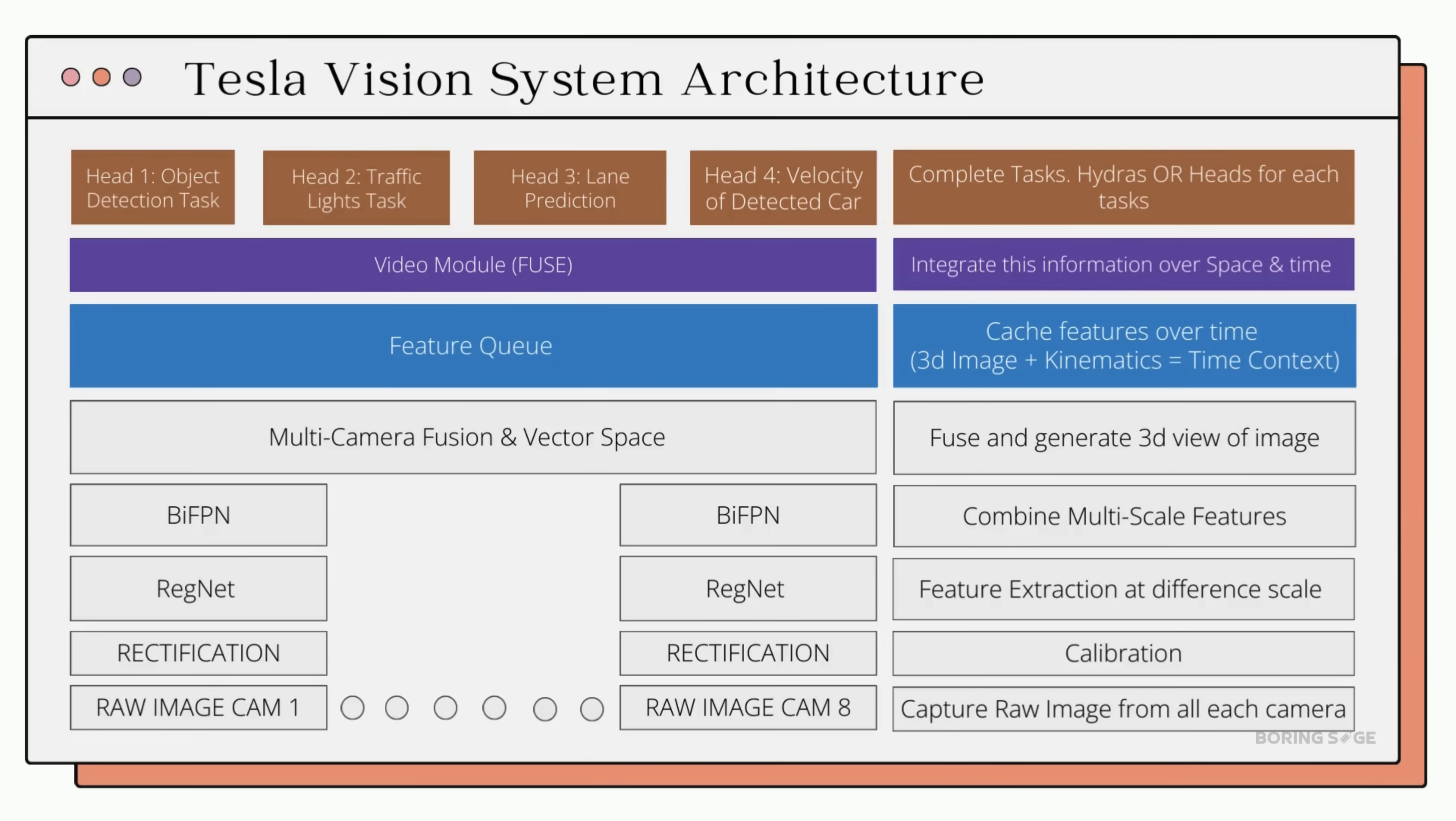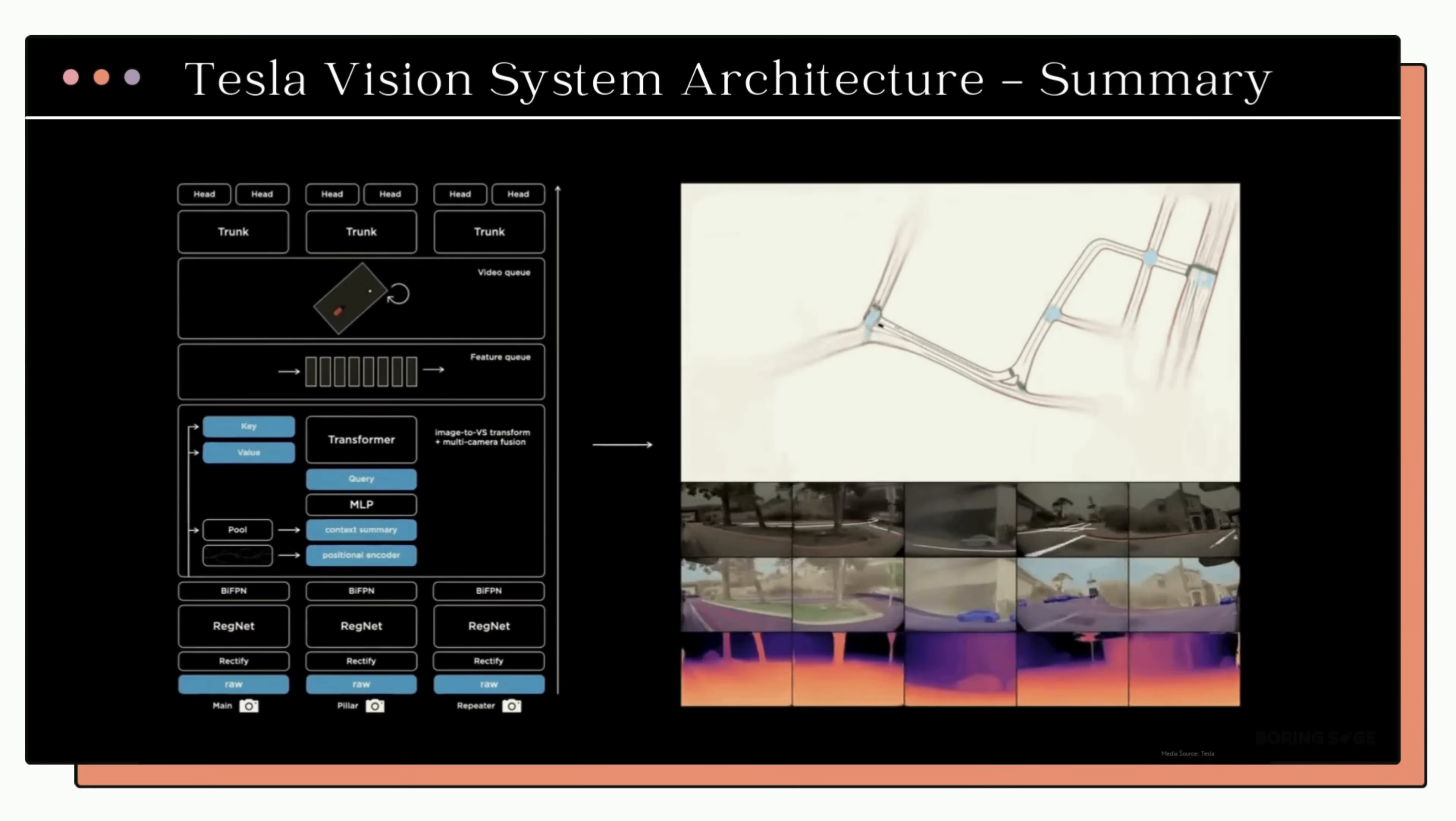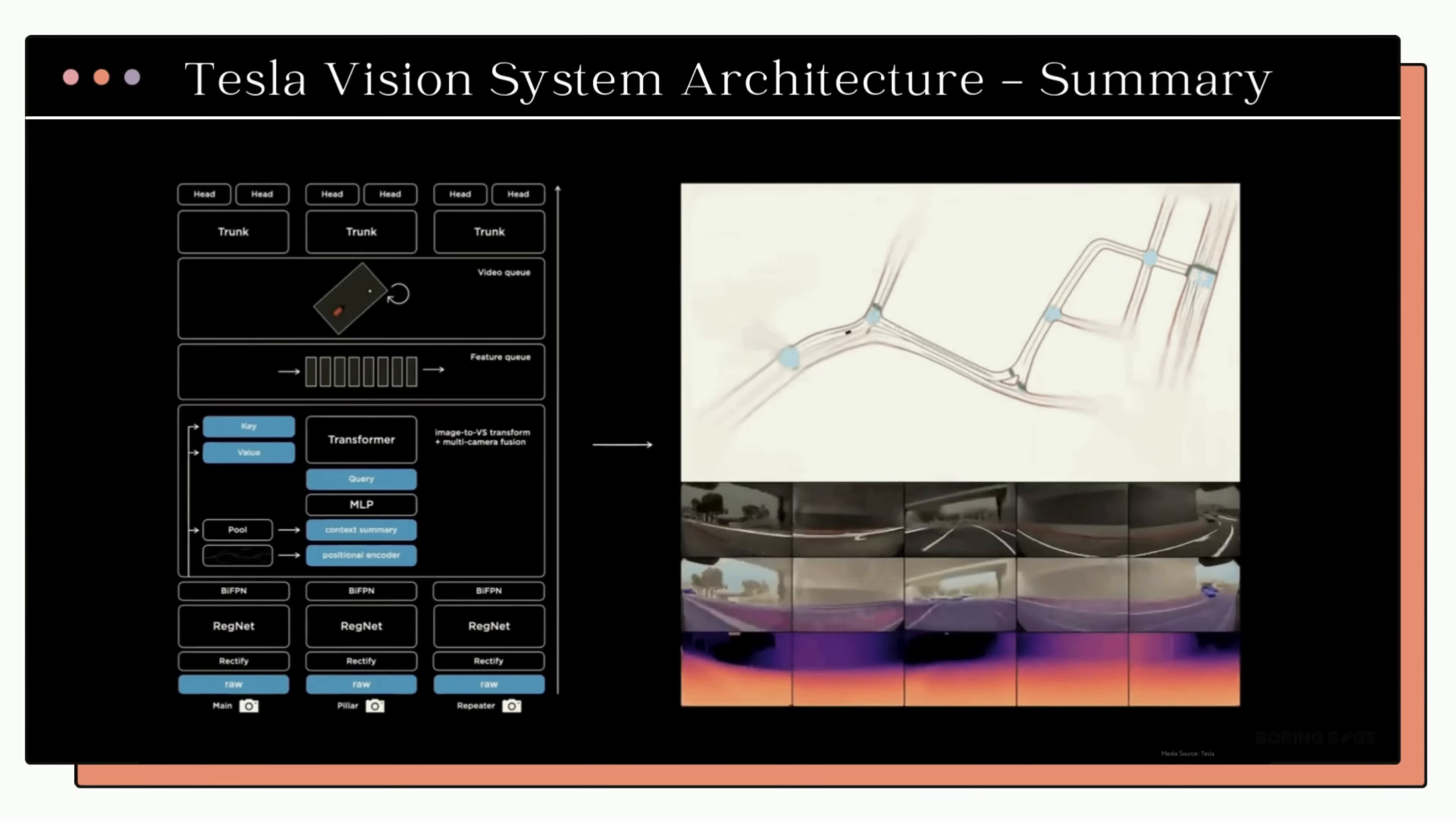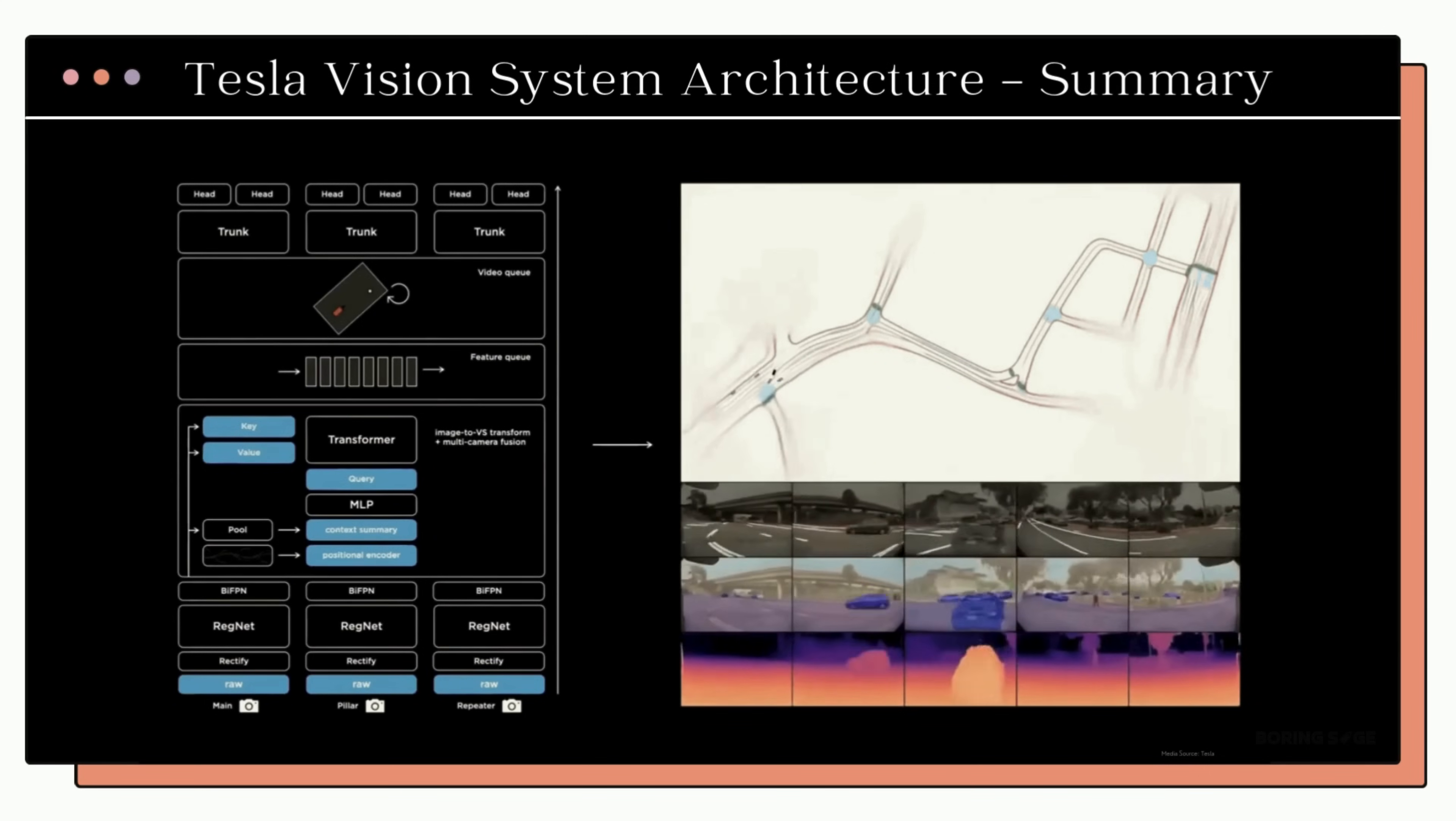This data is then fed to Hydras, which is basically a set of custom neural networks, each designed to handle specific tasks on the top such as object detection, traffic light status check, velocity of adjacent cars and more. Thus, after passing through all these layers, the system produces a coherent 3D model of the environment with predictions of future movements that you can see on the right of the screen.